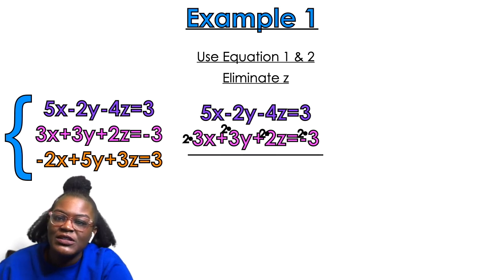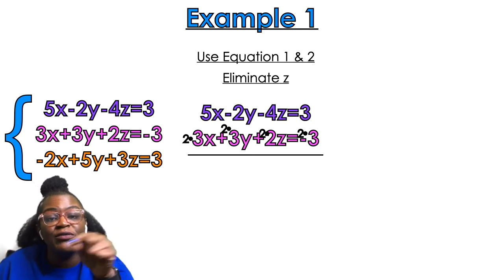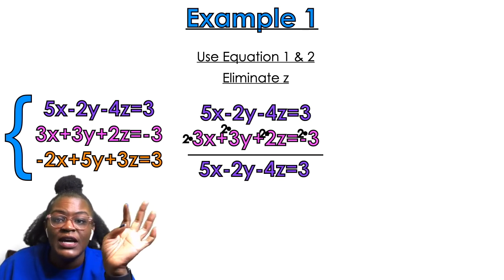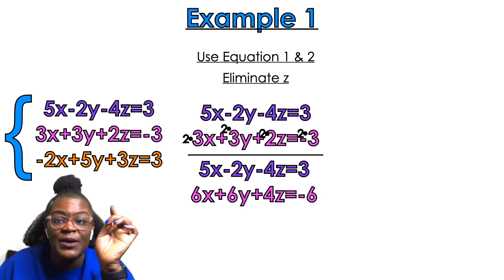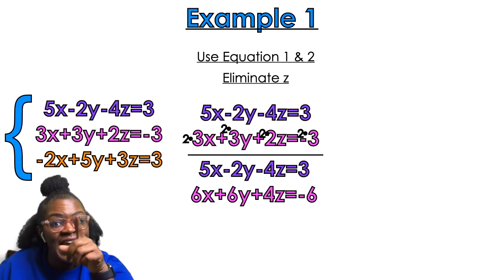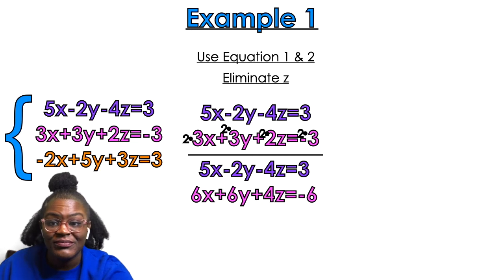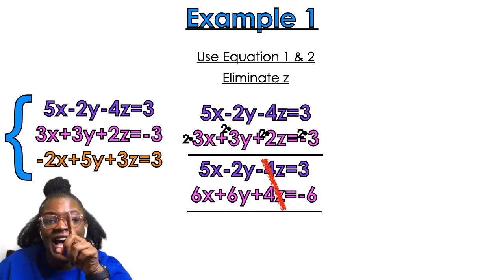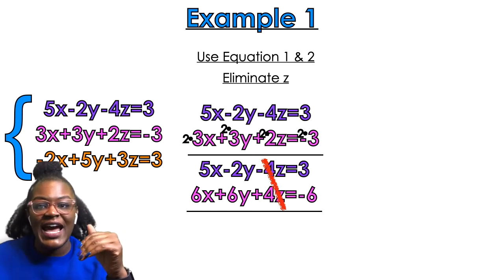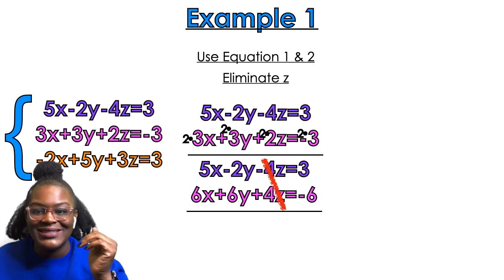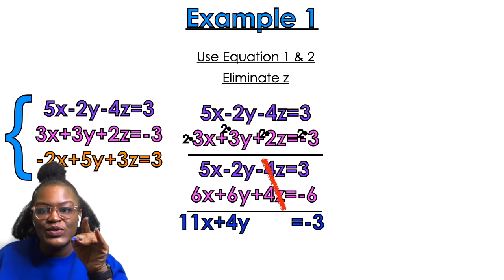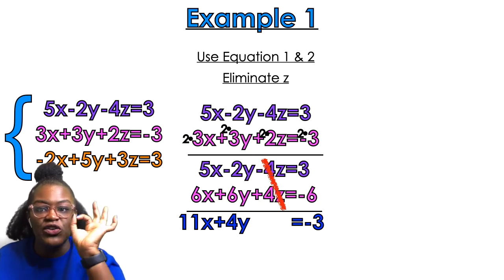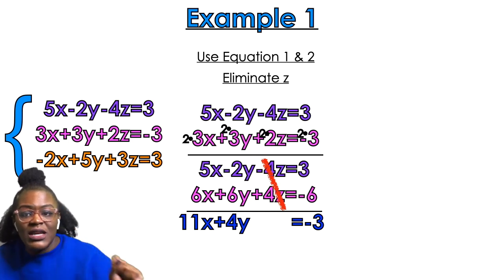Once I multiply everything by two, I rewrite my system. The purple equation stays the same. But after multiplying: 3x becomes 6x, 3y becomes 6y, 2z becomes 4z — which is what I want — and negative 3 becomes negative 6. So once that happens, I cancel out the z. Adding down: 5x plus 6x gives me 11x, negative 2y plus 6y gives me 4y, and 3 minus 6 gives me negative 3. That's my blue equation — I only have two variables.